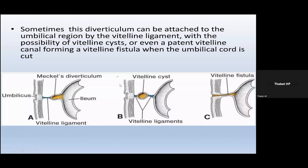The Meckel's diverticulum is sometimes attached to the umbilicus. If it is connected by a ligament, the patient sometimes might complain of abdominal pain, discomfort, and sometimes discharge from the umbilicus. Sometimes it forms like a cyst with no connection to the bowel or to the umbilicus, but patients may still complain of pain. If it forms a fistula with a connection between the small bowel and the umbilicus, the patient will complain of continuous minimal discharge through the umbilicus, and this can be difficult to diagnose.